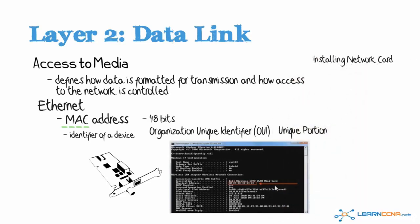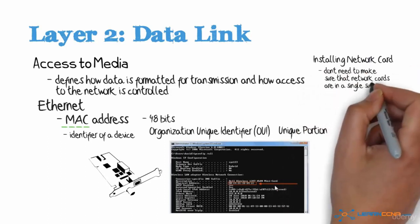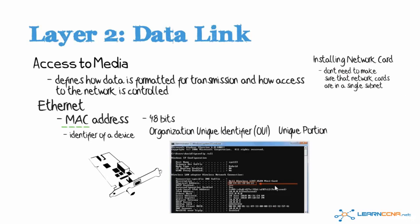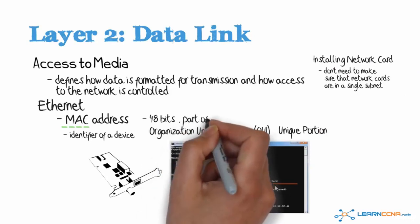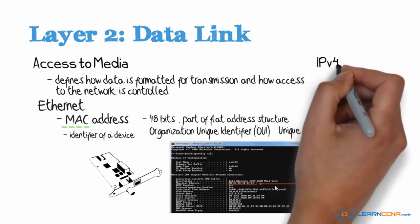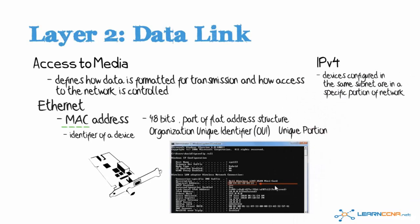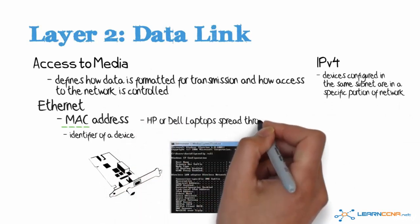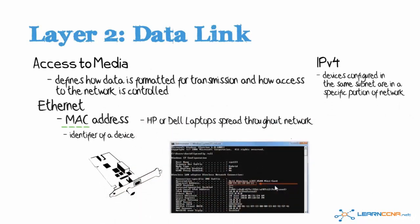When installing network cards, you don't need to ensure that network cards of a specific manufacturer are in a single subnet. MAC addresses are part of a flat address structure, unlike IPv4 or IPv6 addresses, which have a logical addressing scheme typically assigned by a network engineer, with addresses grouped into subnets and configured appropriately. You would ensure IPv4 addresses, as an example, that devices in the same subnet are in a specific portion of your network. However, with MAC addresses, you could have HP or Dell laptops spread throughout your network — you don't have to ensure that MAC addresses are sequential or in a specific order.